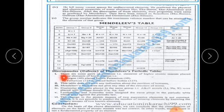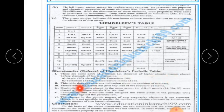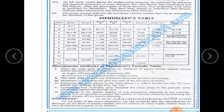Now let us read the discrepancies — defects of Mendeleev's periodic table. There are some pairs of elements where higher atomic masses are placed before elements of lower atomic masses. He arranged argon (40) before potassium, but potassium has an atomic mass of 39, so potassium should come first.